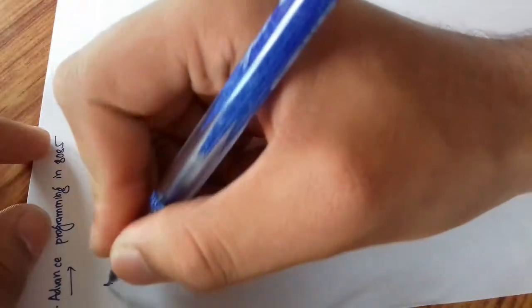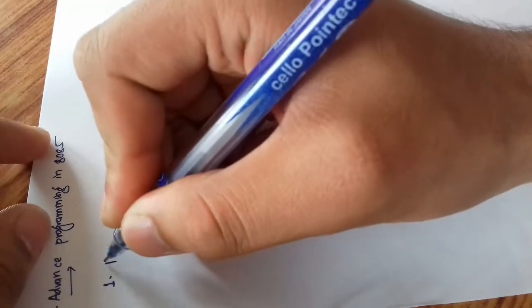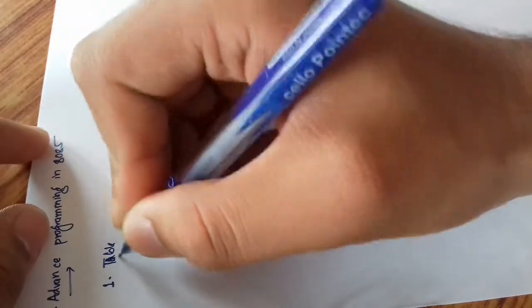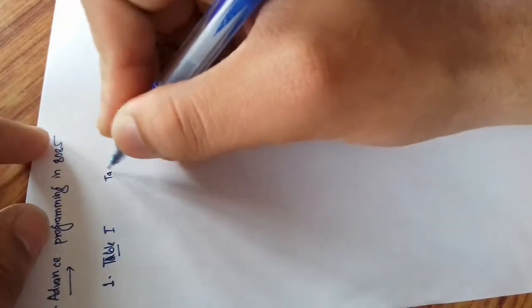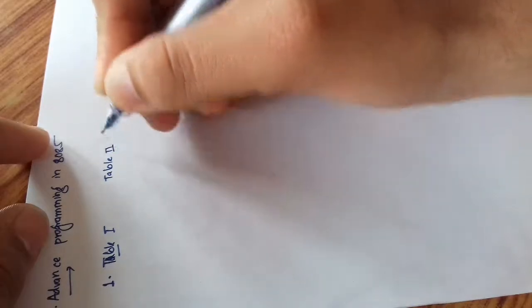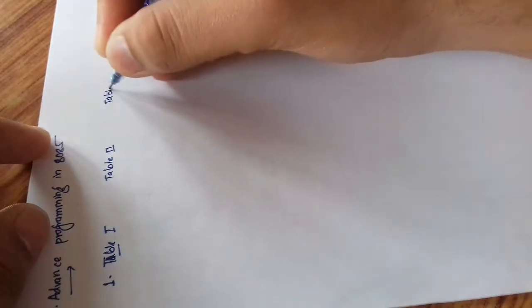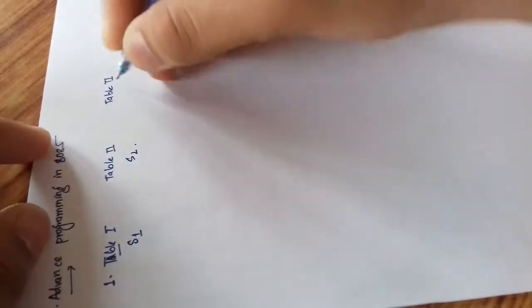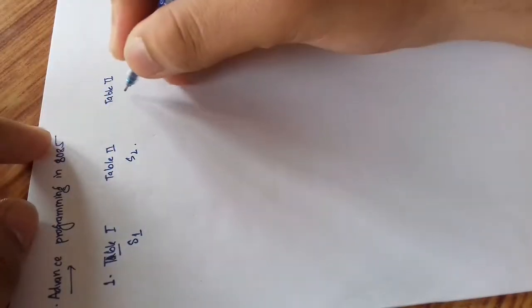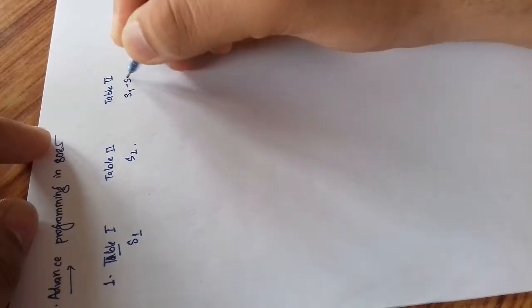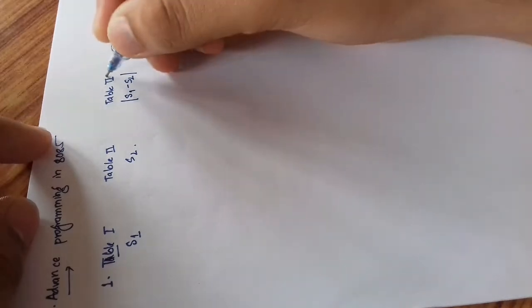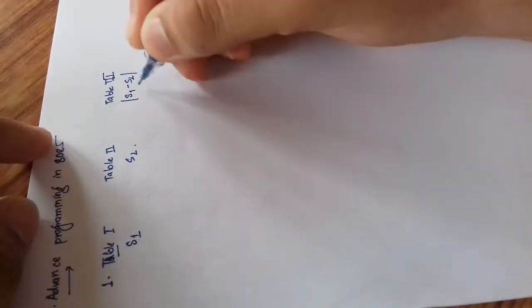Our first question: we have table 1, table 2, and table 3. Table 1 is source 1, table 2 is source 2, and table 3 should contain the result S1 minus S2. We should consider that the values in the destination table 3 should be positive.